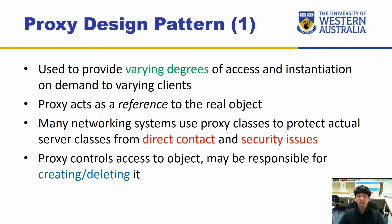The next pattern is the proxy design pattern, which provides varying degrees of access and instantiation on demand to varying clients. Similar to how proxies are used in networking to protect clients within a subnet from outside and hide their identities, and how firewalls use proxy settings to act on behalf of users — a proxy acts as a reference to the real object to avoid direct contact from external entities that may be trying to exploit vulnerabilities. Instead of external entities accessing applications directly, the proxy instantiates those applications on demand and provides them as a service.